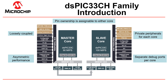The slave core in the DSPIC 33CH family can be dedicated to executing time-critical control code, while the master core is busy executing user interface, system monitoring, and communication functions. The device features multiple debug ports assigned for both master and slave, allowing simultaneous debug of both cores.